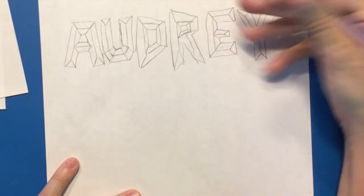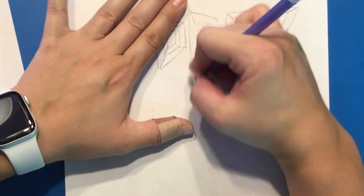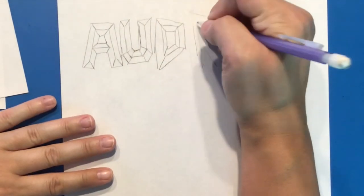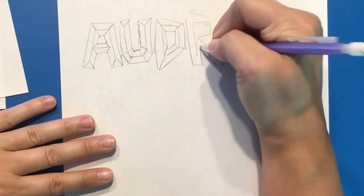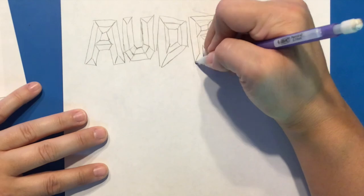Now if as you're going, if something looks a little weird—for example, I did not like how the R turned out—I went back and redid it. I changed the shape of my R a little bit and was much happier with my results. So again, alter it, make it your own.